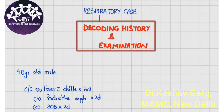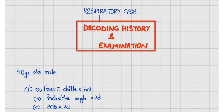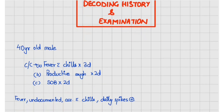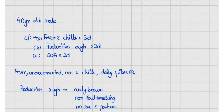This video will discuss how to decode history and examination of a respiratory case. We have a 40-year-old male who presented with chief complaints of fever with chills since three days, productive cough since two days, and shortness of breath since two days.